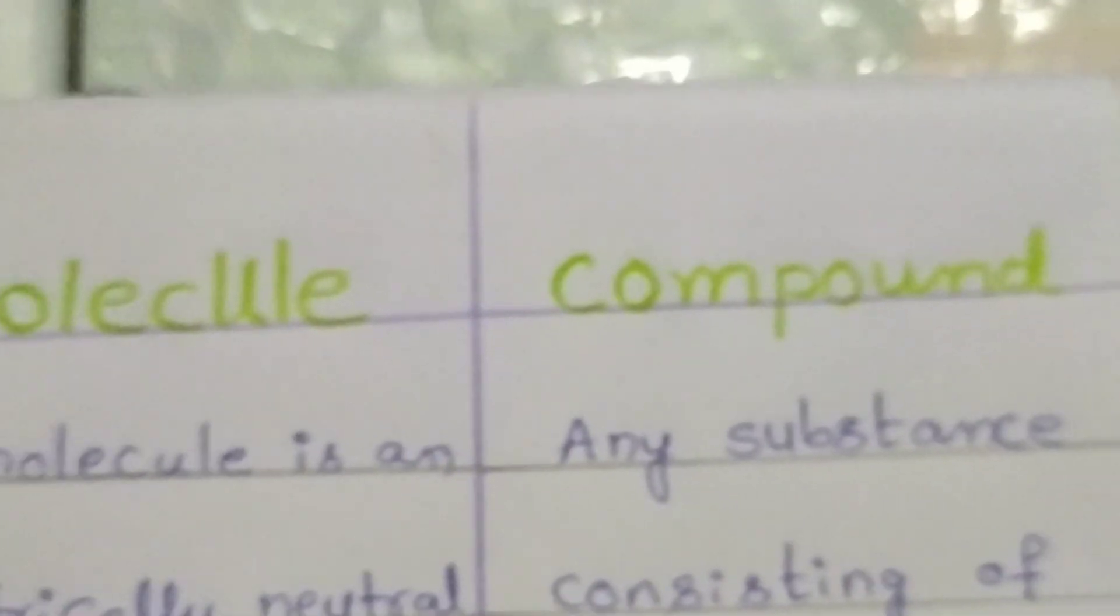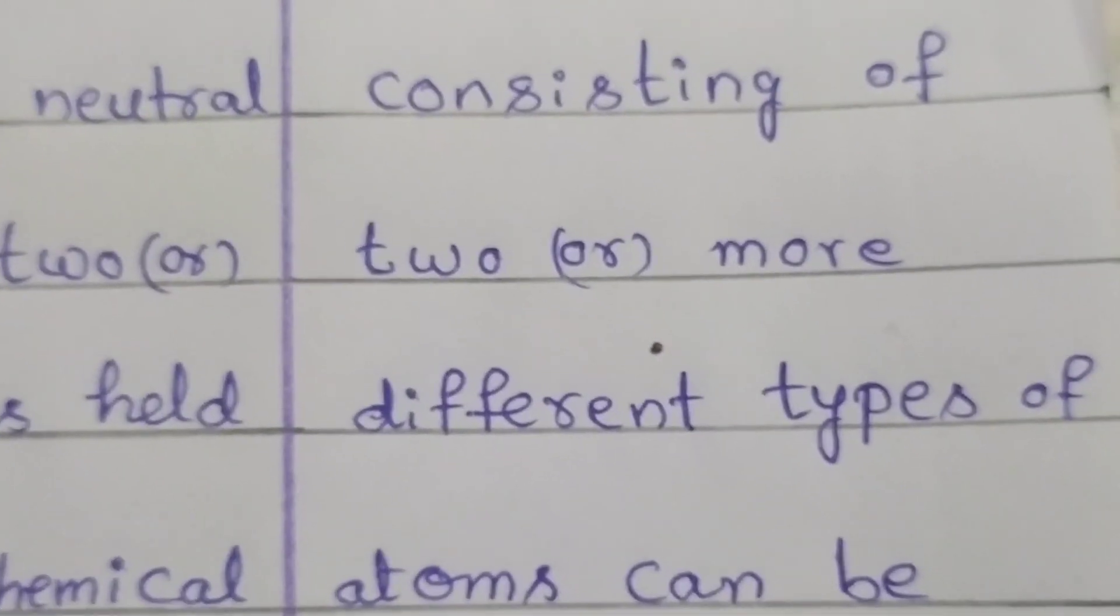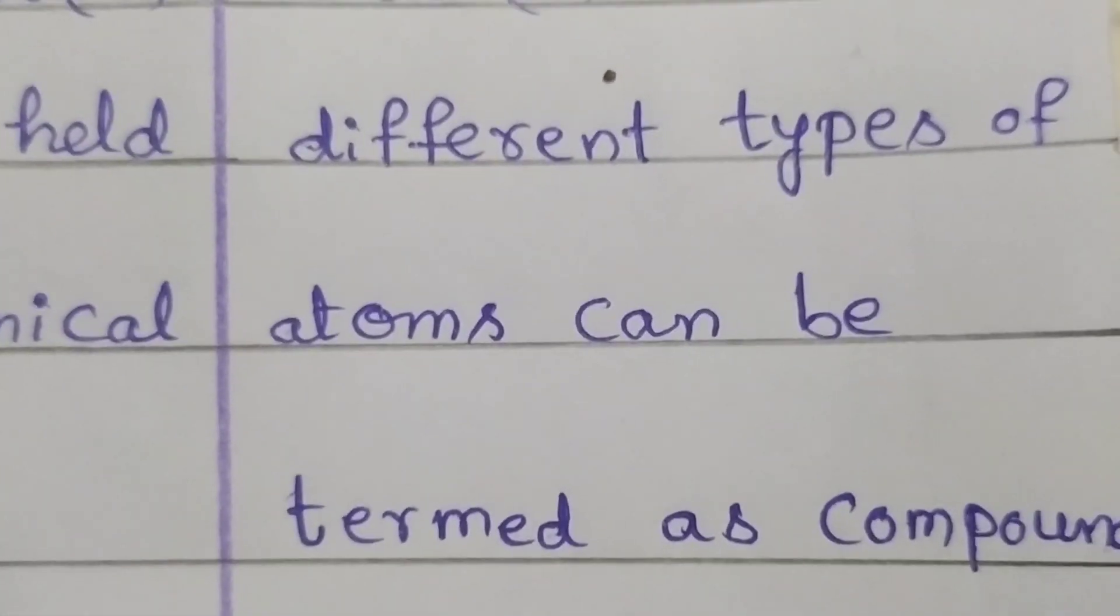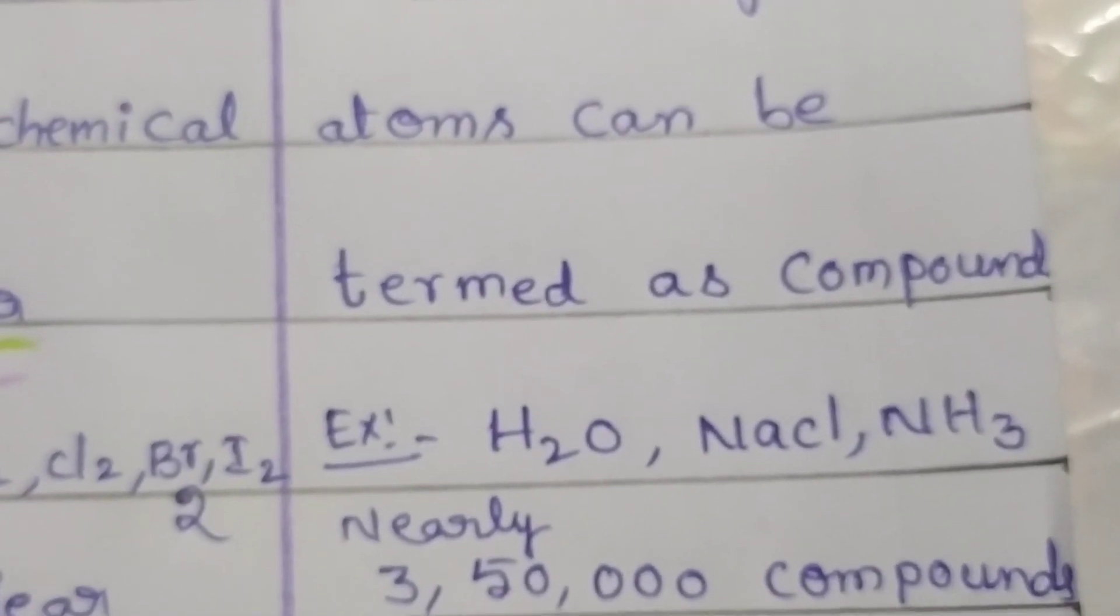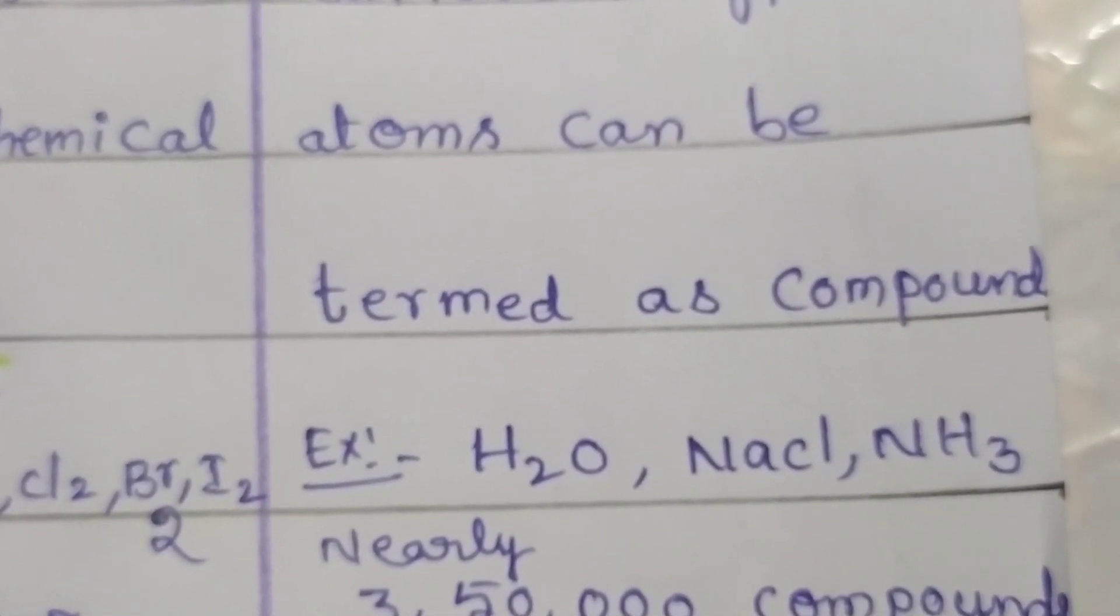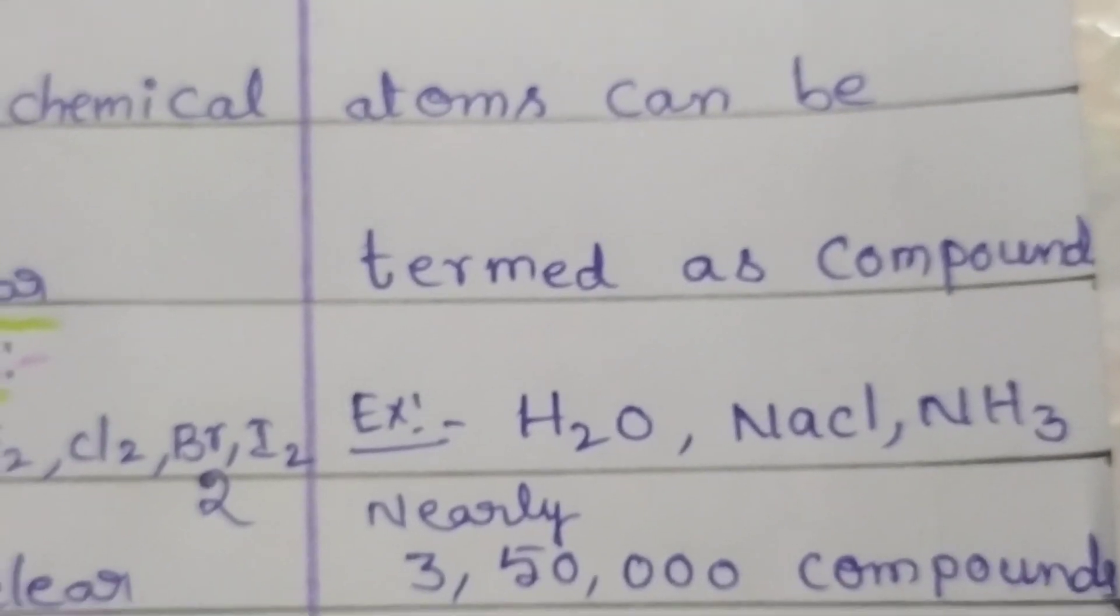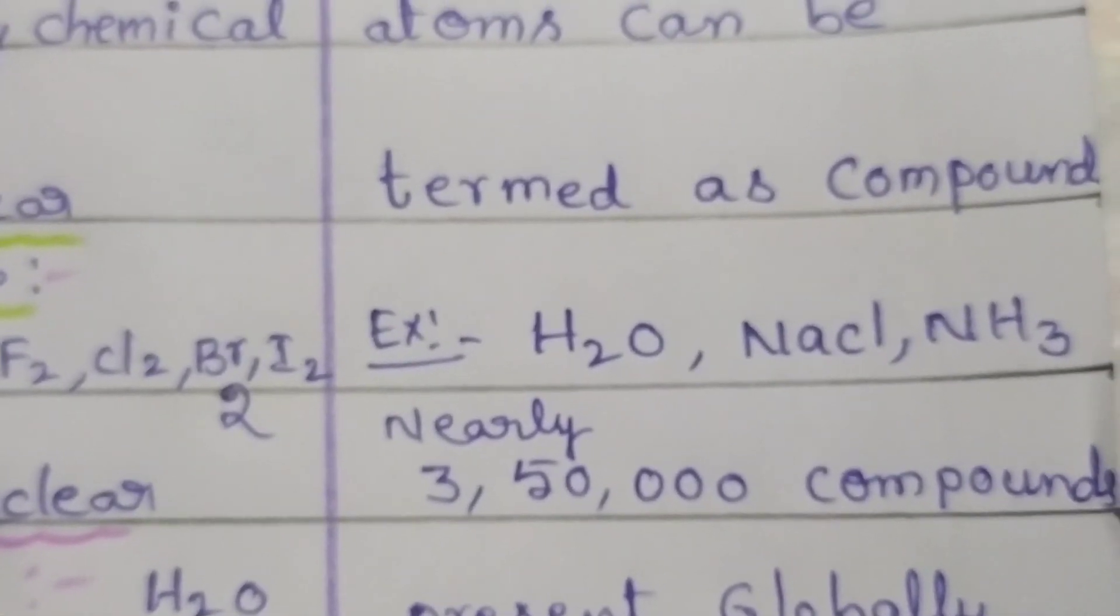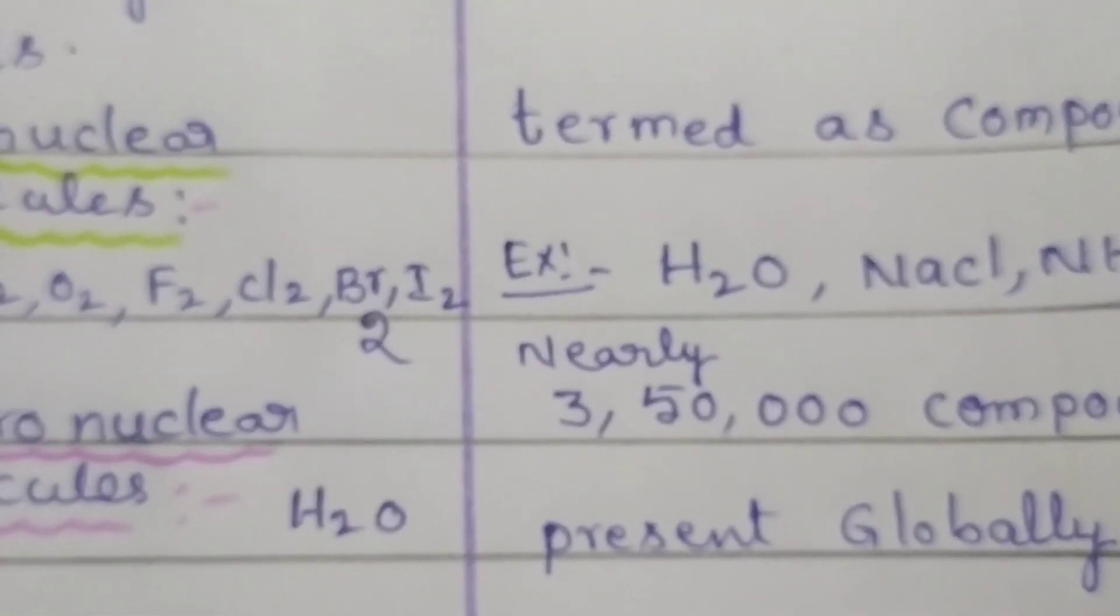Next, we discuss about compound. Any substance consisting of two or more different types of atoms can be termed as compounds. That means different types of atoms will combine together to form a compound. For example, H2O water molecule, NaCl sodium chloride, NH3 ammonia. These are some examples for compound. Nearly 3,50,000 compounds are present globally around us.